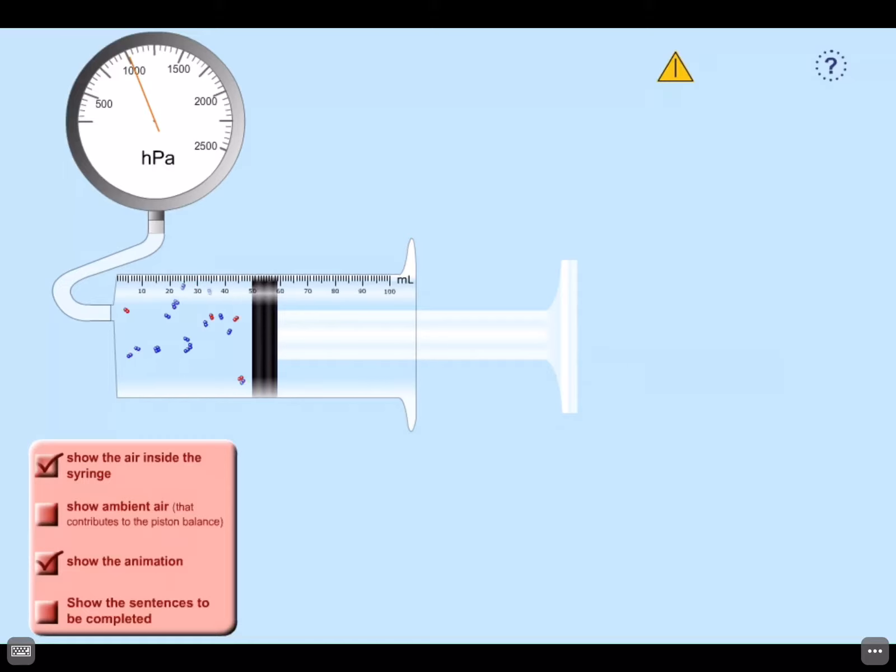I can move this to 40, for instance. There we go, a little bit slow to react. So let's say I move it to 40, then I can record the pressure. As I continue to make this smaller, you'll notice that the pressure goes up on the pressure sensor.